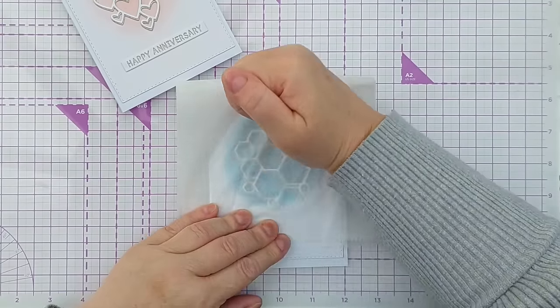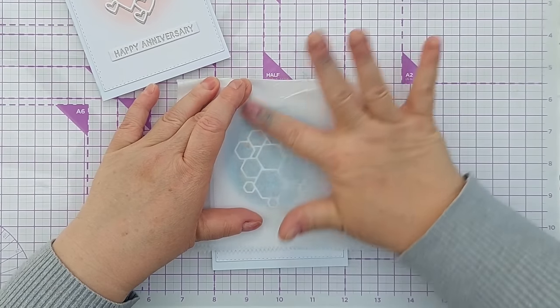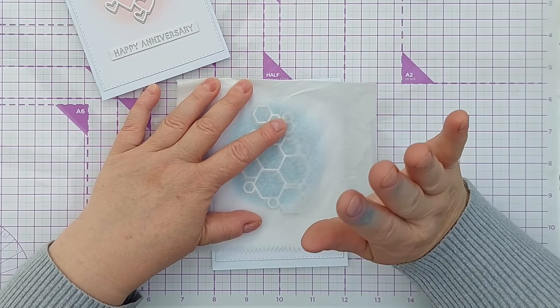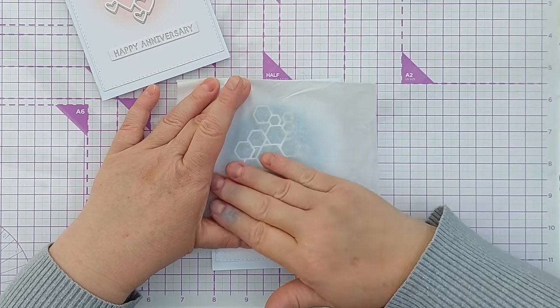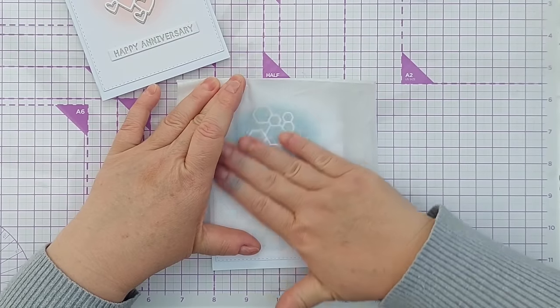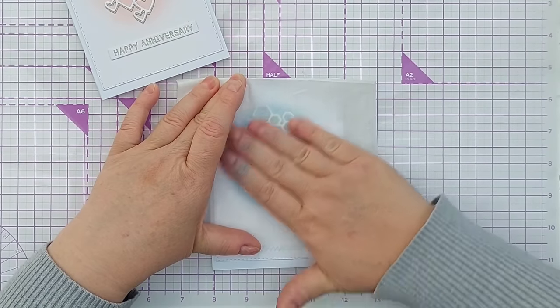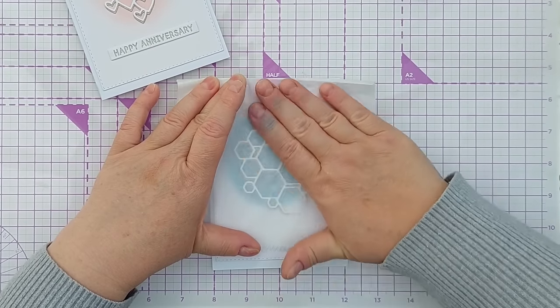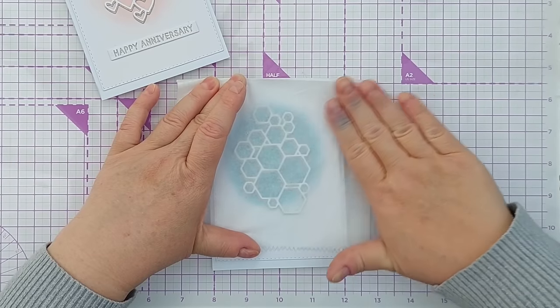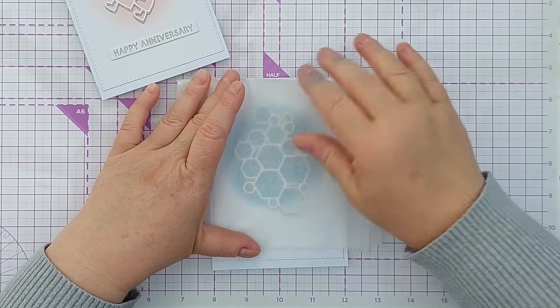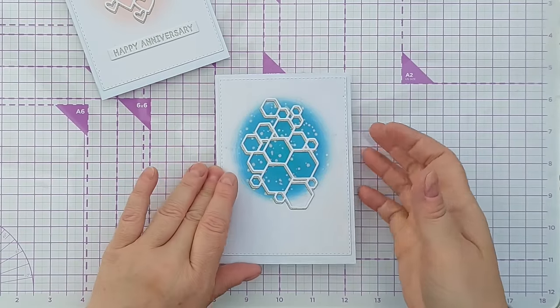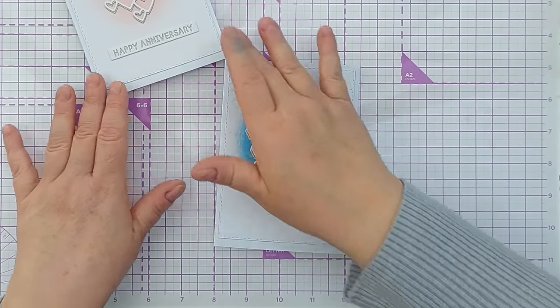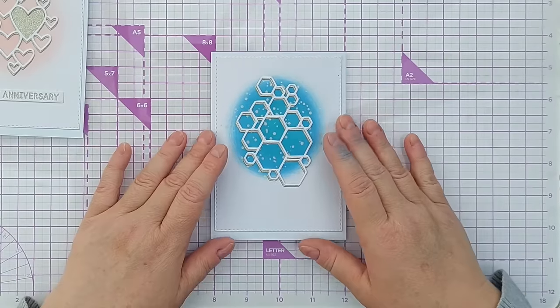I'm going to press it down with deli paper. You can use greaseproof paper, you can use baking parchment, you can use the release paper from double-sided adhesive sheets or sticker packs. It's just anything that is kind of slick and won't grab onto the glue. It will just let you press down through it so everything gets nice and flattened out. The reason I use deli paper is because I've got a big pack of it left over from gel printing experiments.